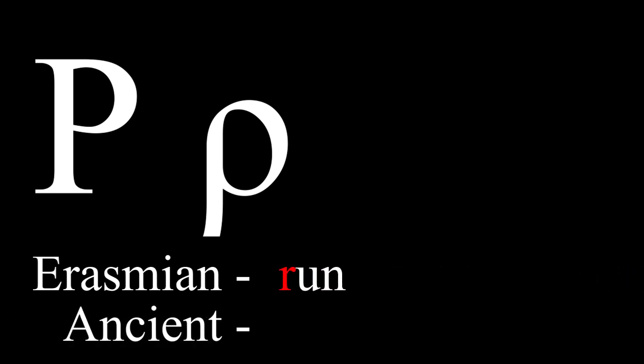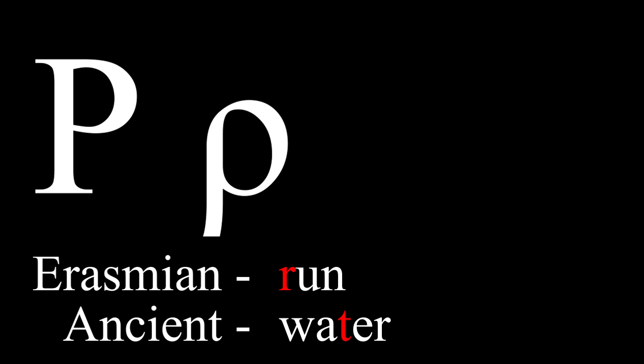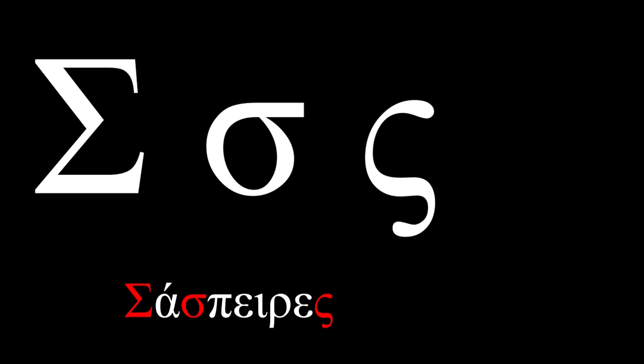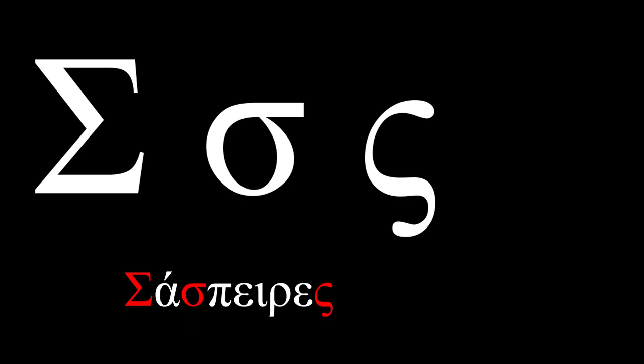Rho is the next letter of the Greek alphabet. In Erasmian pronunciation, it sounds like the English r, as in 'run.' In ancient pronunciation, however, it is pronounced with a rolled r — a counterintuitive example is the 't' in 'water.' This letter is sigma. It has three forms: the uppercase sigma is used whenever capitals are used, the middle sigma is used in the middle of words, and the final sigma is used at the ends of words. These letters differ only in their looks. Sigma is pronounced with an s, as in 'simple.'